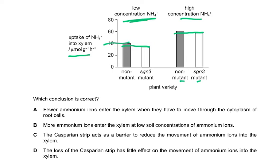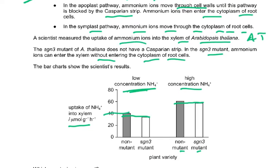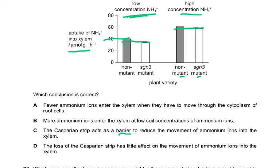The Casparian strip acts as a barrier to reduce the movement of ammonium ions into the xylem. The loss of the Casparian strip — that's the SgN3 mutant — has little effect. So that is why the answer is D, because the loss of the Casparian strip has little effect on the movement of ammonium ions into the xylem. That was true for low concentration as well as high concentration.